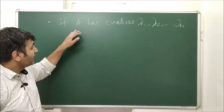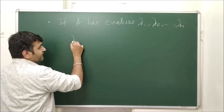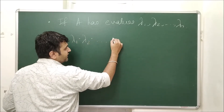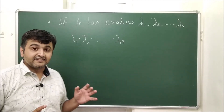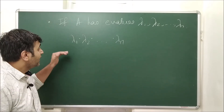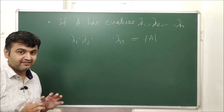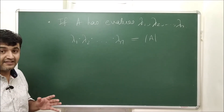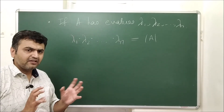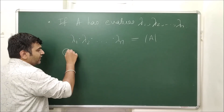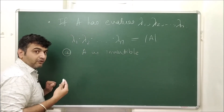Next, some nice connections: if matrix A has eigenvalues λ₁, λ₂, ..., λₙ, then the product λ₁ · λ₂ · ... · λₙ equals the determinant of A. This is a very important result — the product of all eigenvalues gives you the determinant of the matrix.